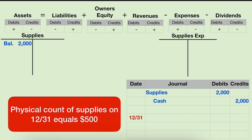Let's look at the supplies account. Notice the numbers in blue. It appears that during the year we purchased $2,000 of supplies, and now at the end of the year the balance in that account is still showing $2,000. But is that correct? Do we still have $2,000 of supplies? Do we want to show $2,000 as the amount of the assets on the balance sheet? Let's go count — let's find out where we keep the supplies and do a quick count. We'll say more or less $500. If we have $500, we must have used $1,500.